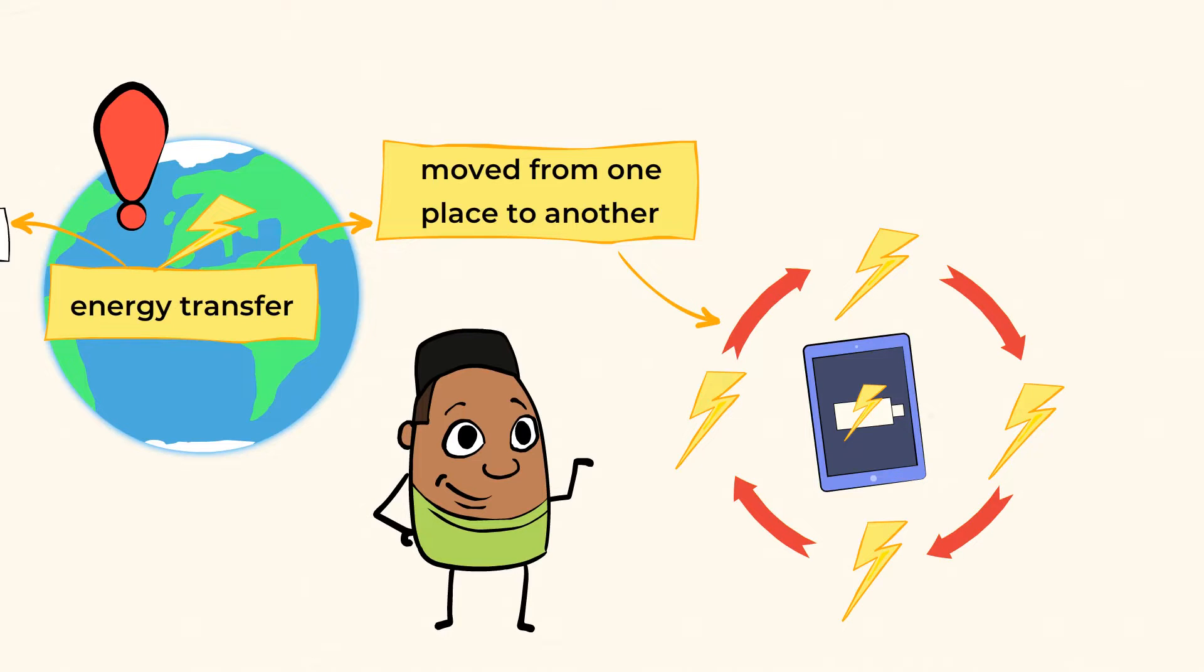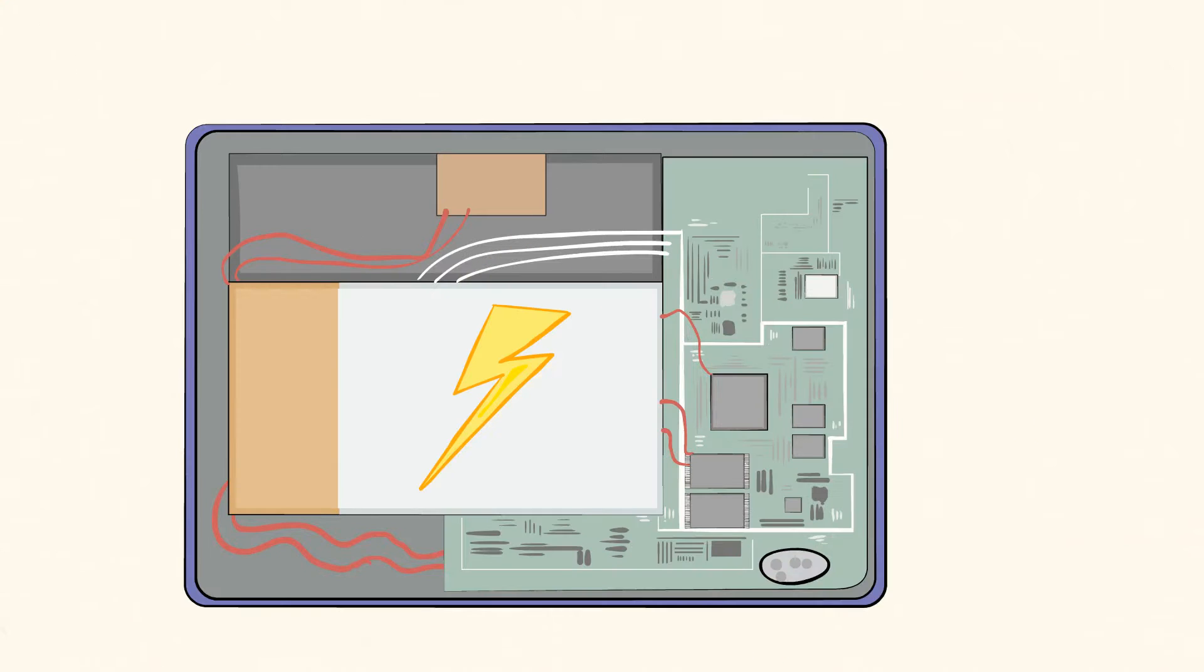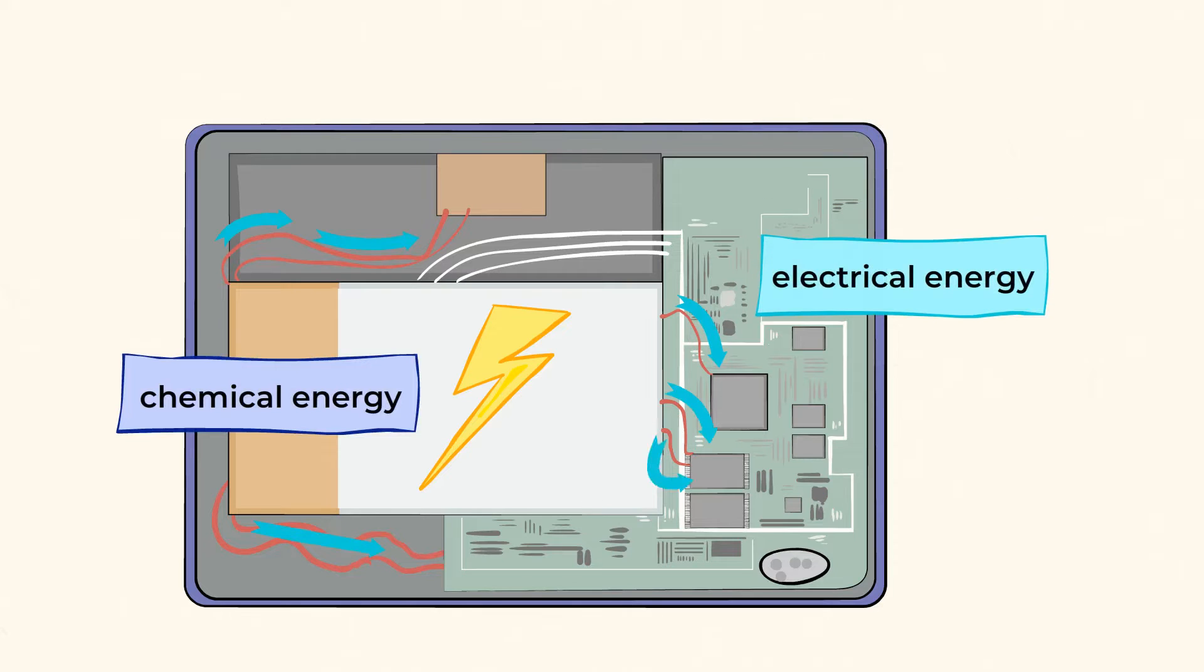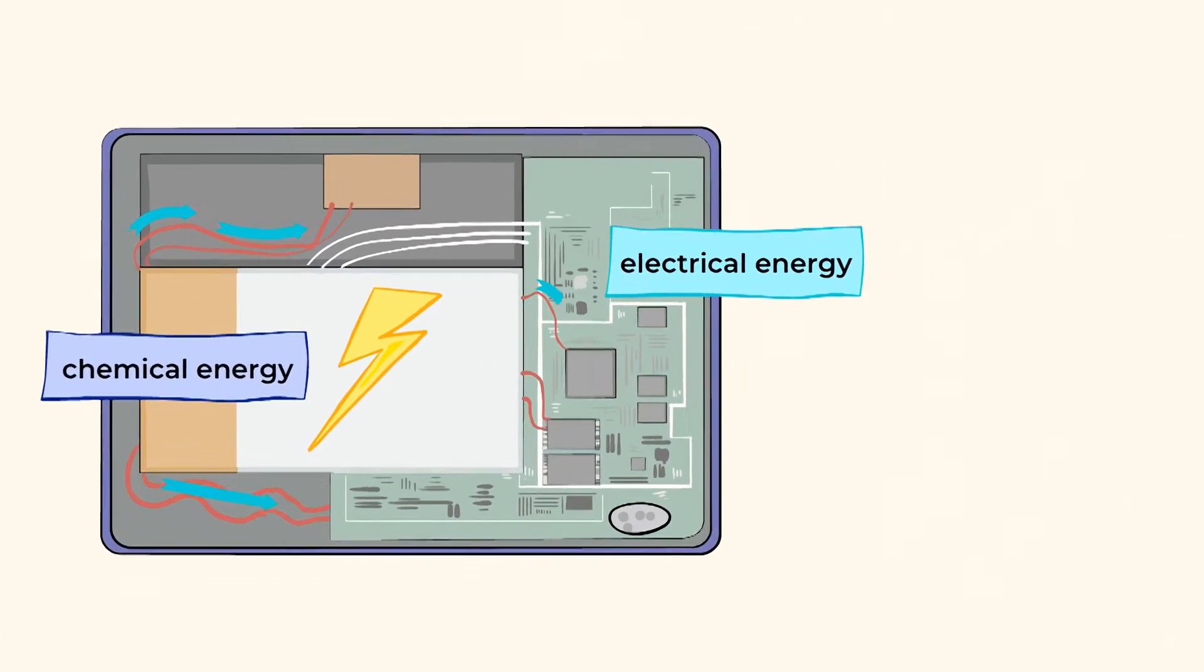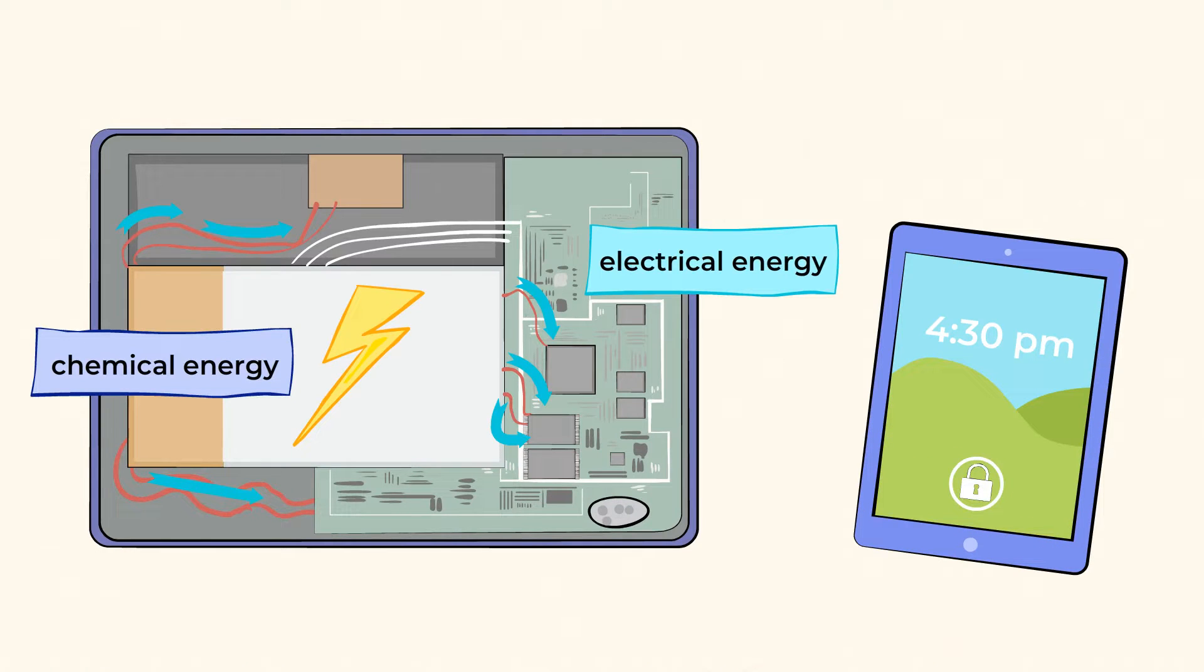In fact, right inside Mia's tablet, there's another way that energy is transferred. In the battery, chemical energy is transformed into electrical energy. And that electrical energy moves along the wires in the tablet and powers it so that you can use it.